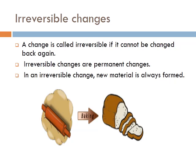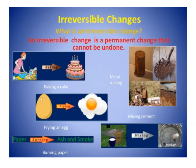Irreversible changes are changes that cannot be changed back again — a change in which the initial substance cannot be obtained back by reversing the action. Irreversible changes are permanent changes, and in an irreversible change, a new material or new substance is always formed. Like baking — baking gives us a new substance which cannot be reversed. Some examples of irreversible changes are: baking a cake, frying an egg, burning of paper into ash and smoke, metal rusting, and mixing cement with water.